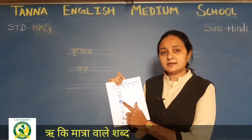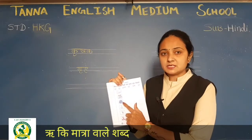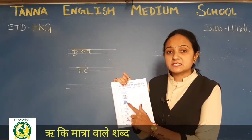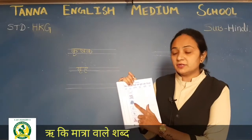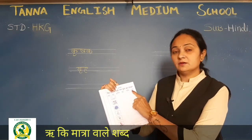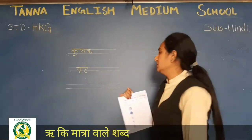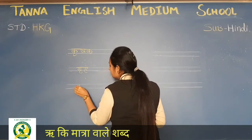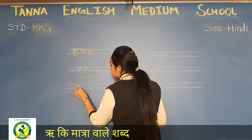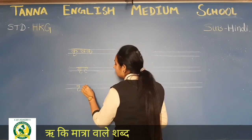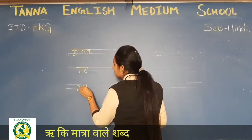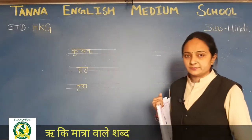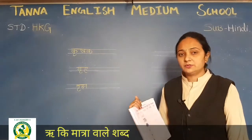Third picture kis ka hai? Tree. To tree ko kya bolenge haam? Vriksh. Kya likha hai? Vriksh. So right here — pehle vao karo, neeche ri ki matra, aur fix — shatriya ka sh. Vriksh.